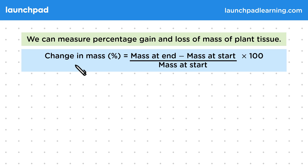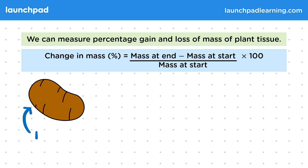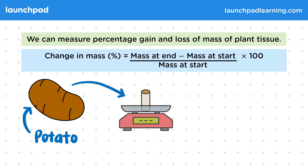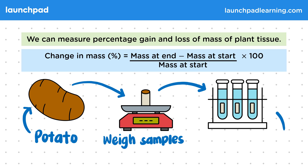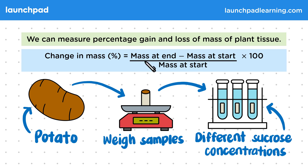Let's quickly recap the practical that investigated the mass of plant tissue. Using a potato, we cut out cylinders using a cork borer. We weigh each of these individual potato cylinders before placing them into solutions of different concentrations. After they've been in the solutions for a while, we weigh the cylinders again to see if there's any change in mass due to osmosis. Using the results of this practical, how can we calculate the percentage gain or loss of mass in practice?